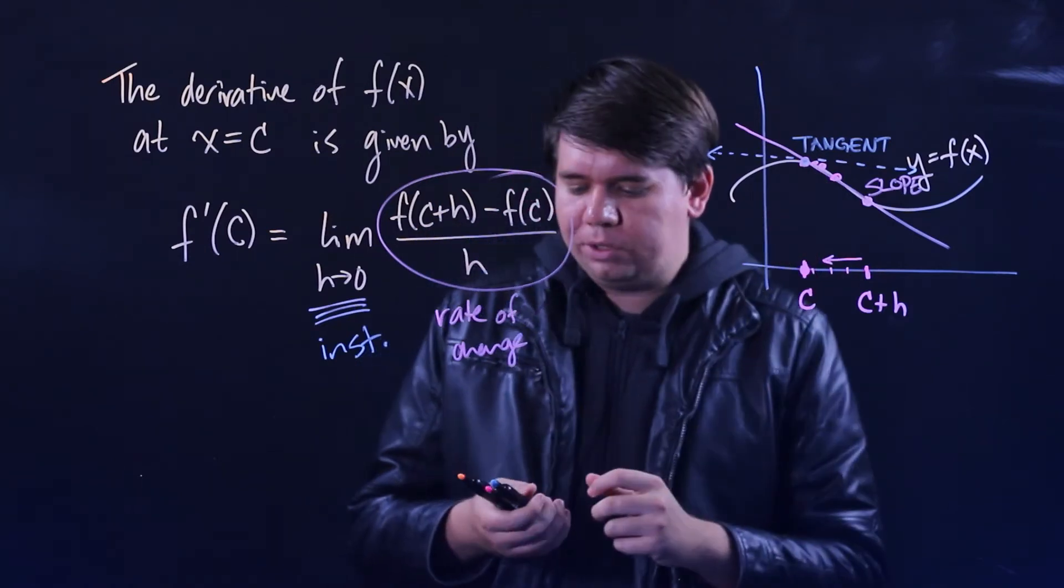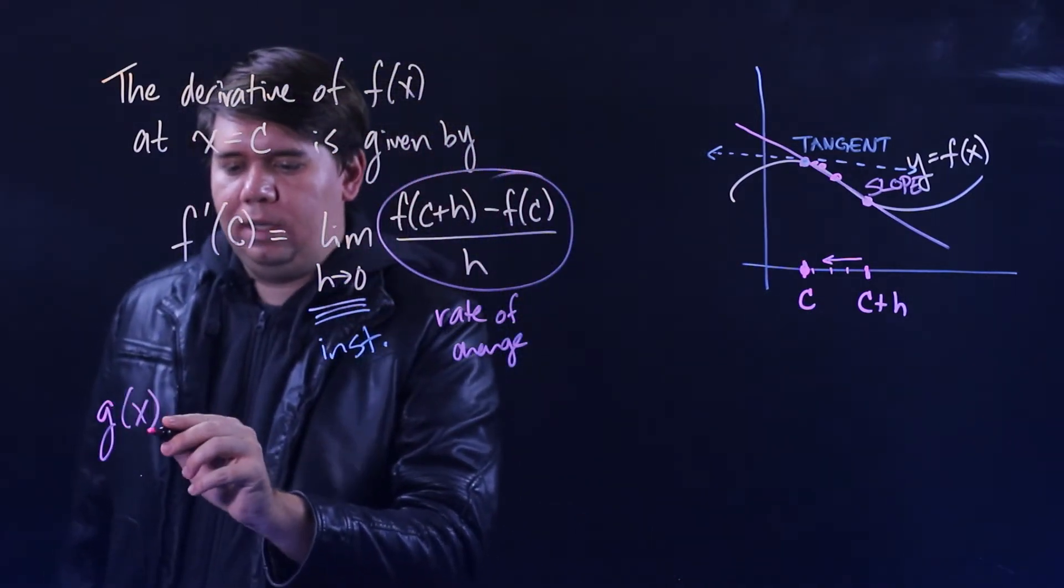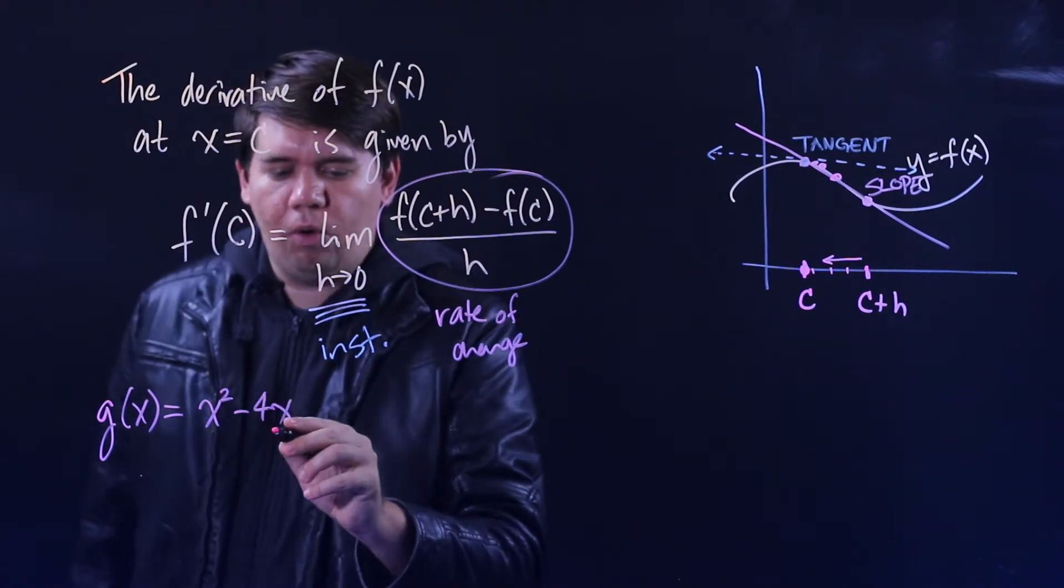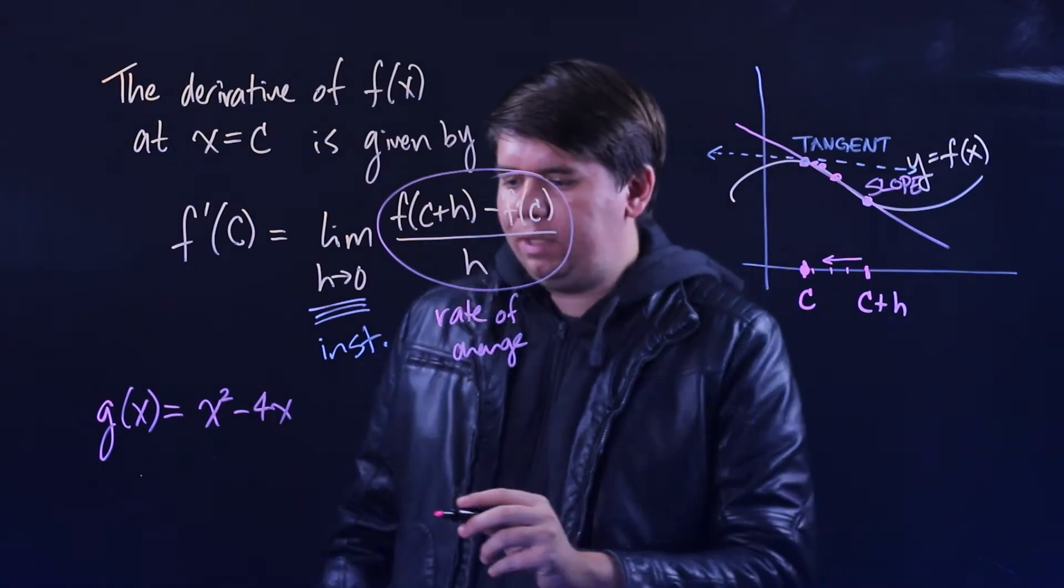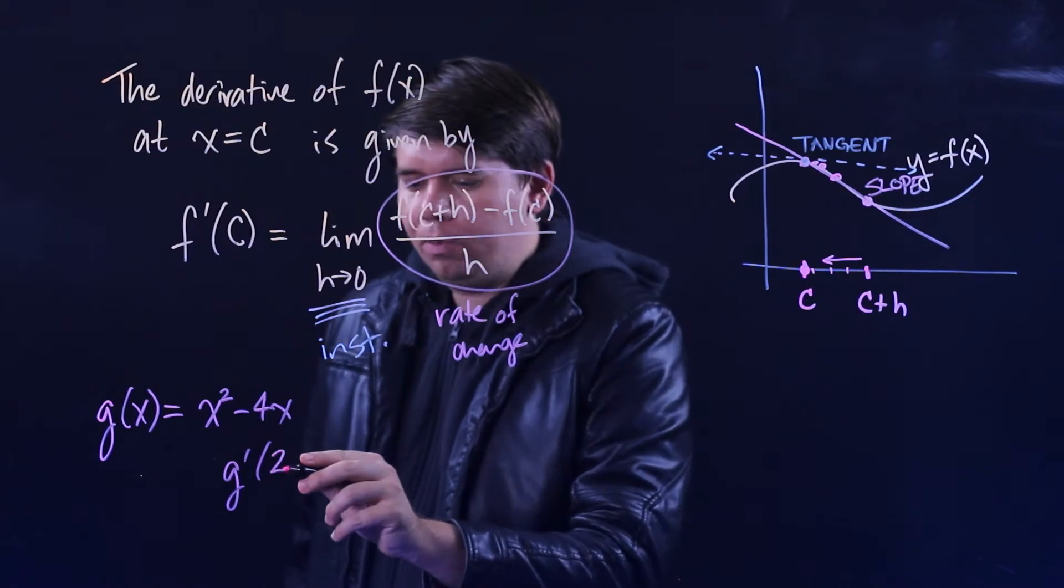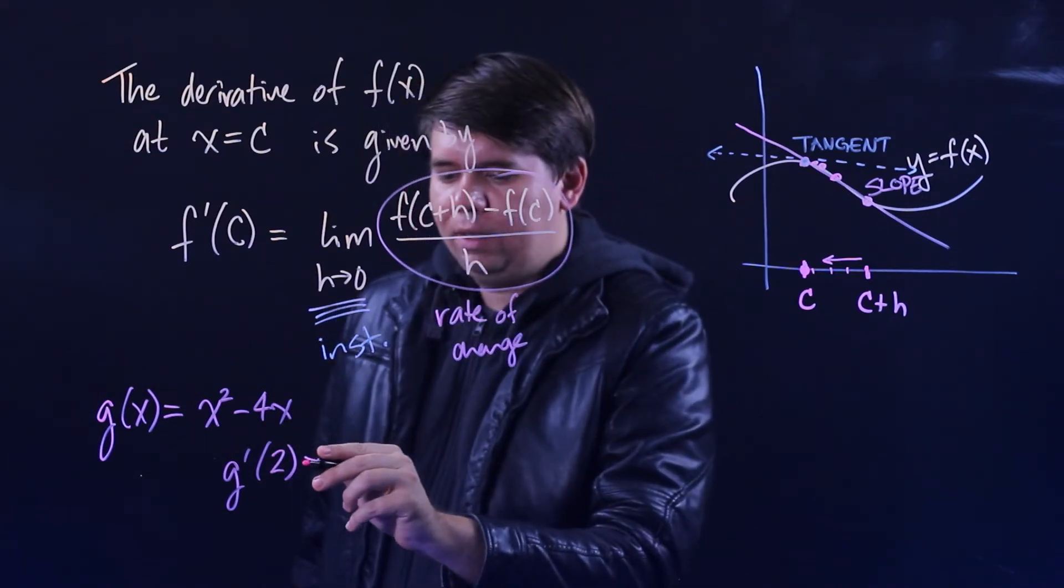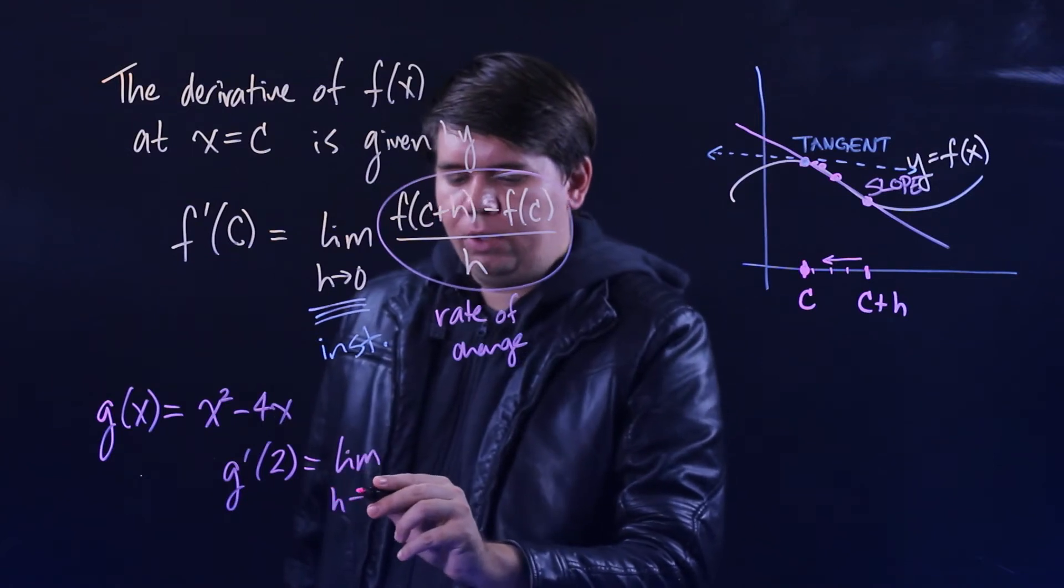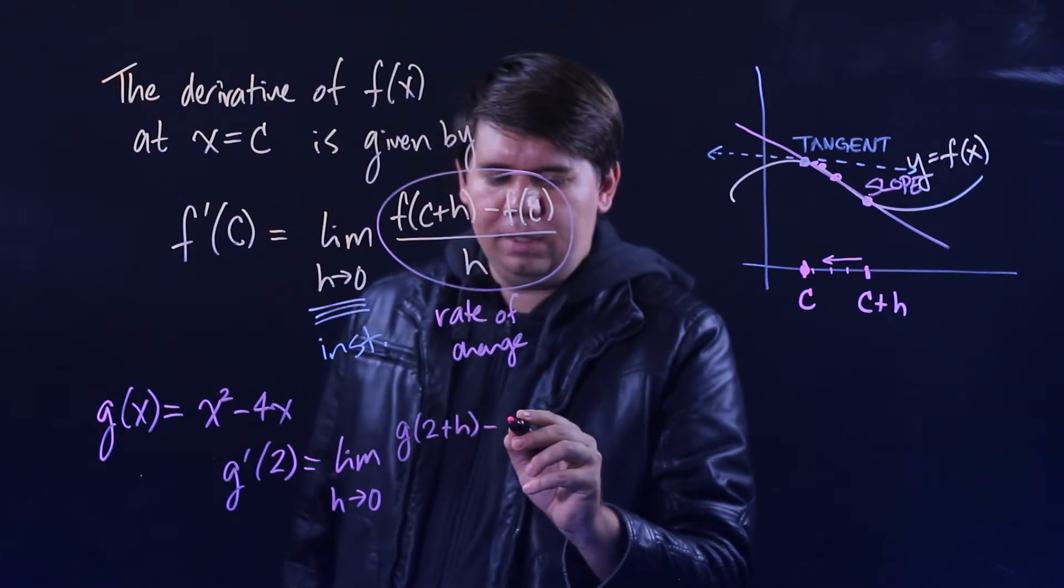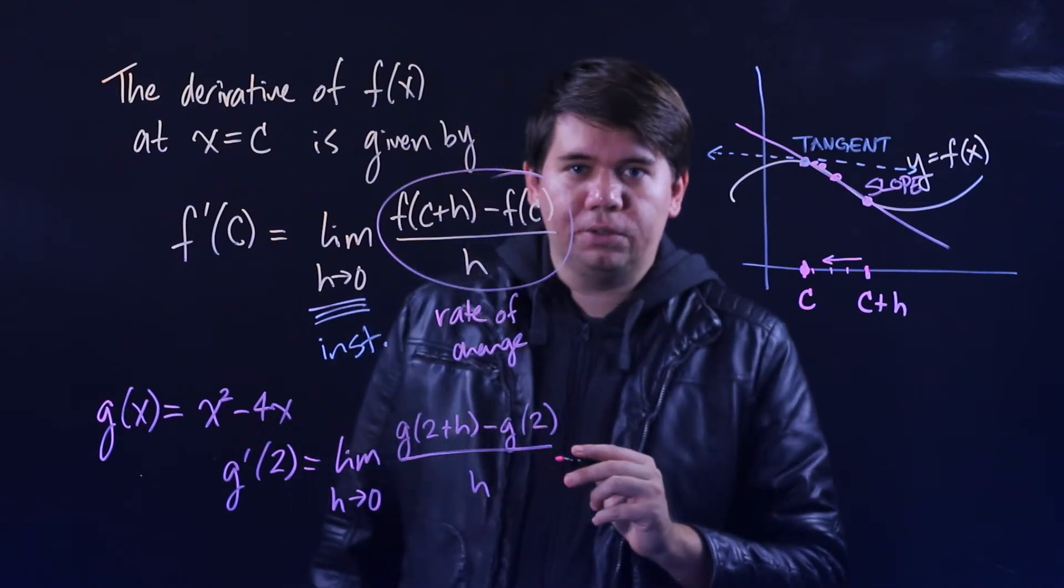Let's see how this plays out with a particular function. Consider the function g(x) is equal to x squared minus 4x, and let's go ahead and calculate the derivative of g(x). Let's say g'(2), what is that going to be? We use our definition. This will be just the limit as h goes to 0 of g(2+h) minus g(2) all over h.